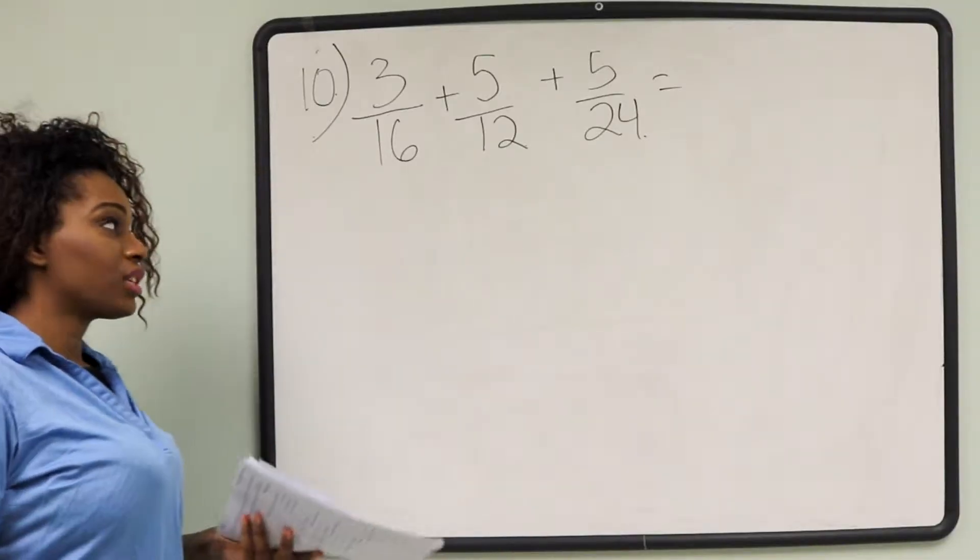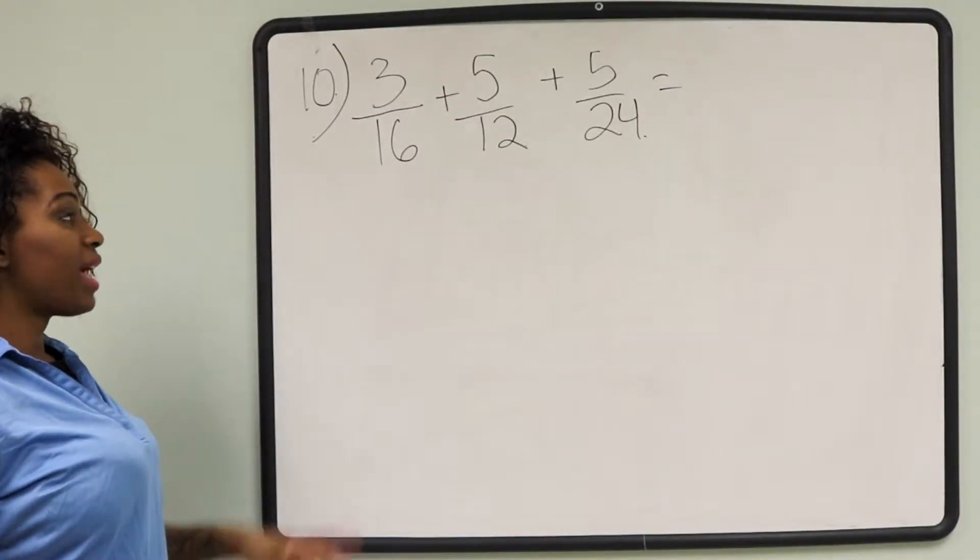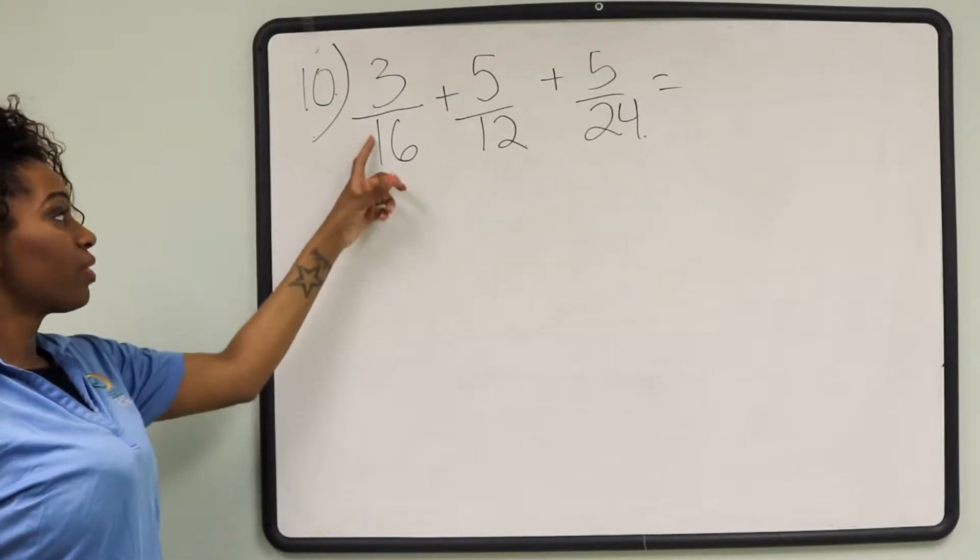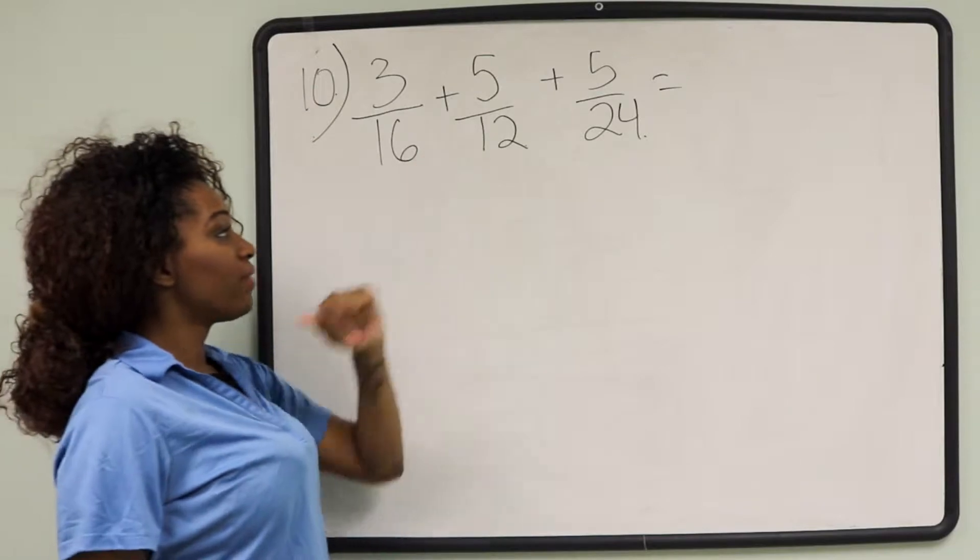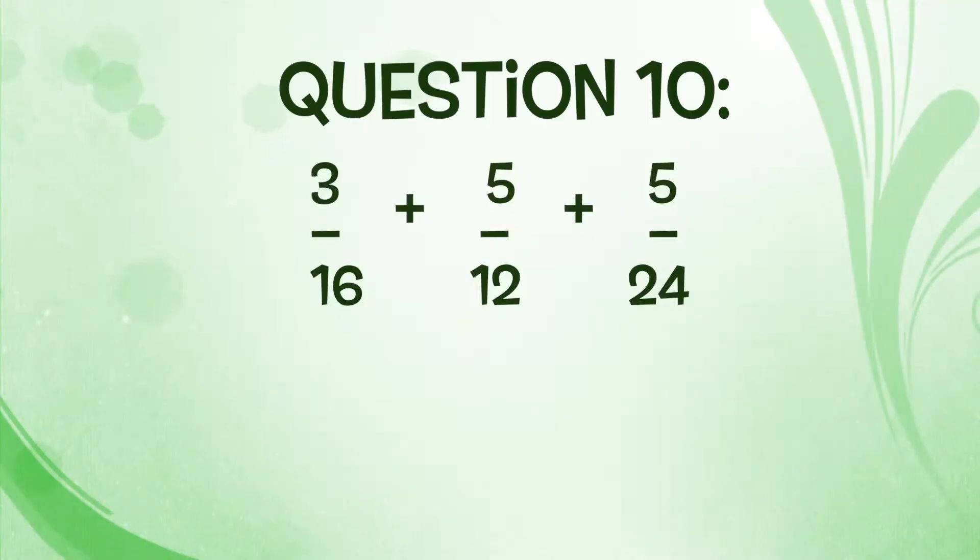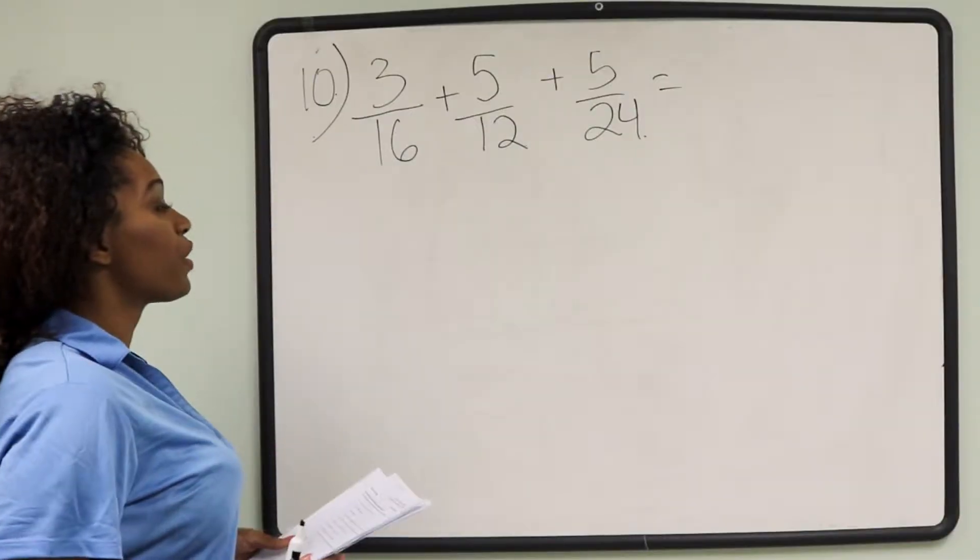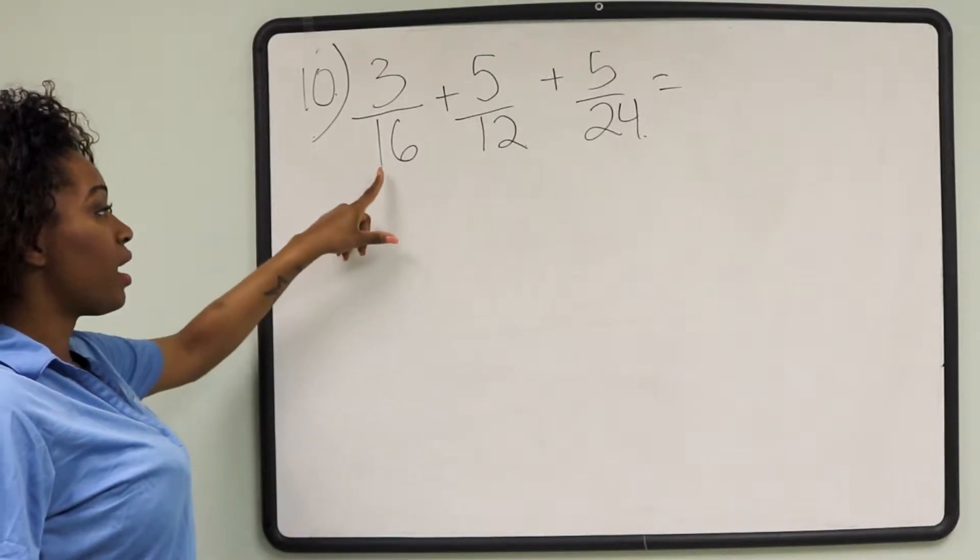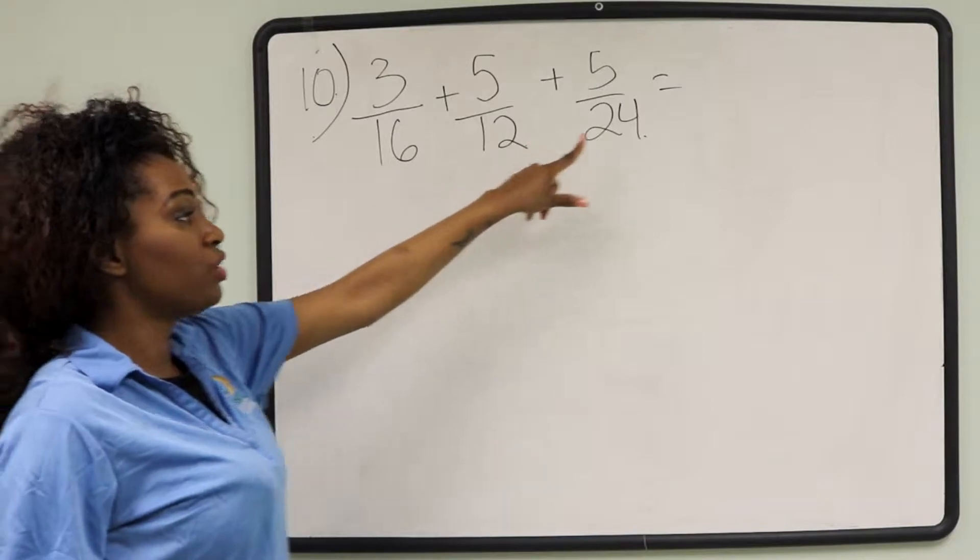Question number 10 on the MAC086 review is addition of fractions. We're taking 3/16 and adding 5/12 and adding 5/24. What we first need to do is find the least common denominator for 16, 12, and 24.